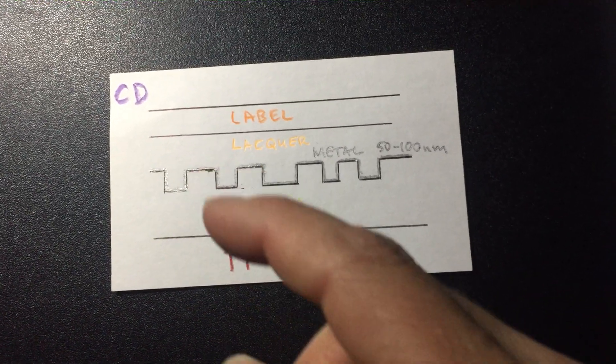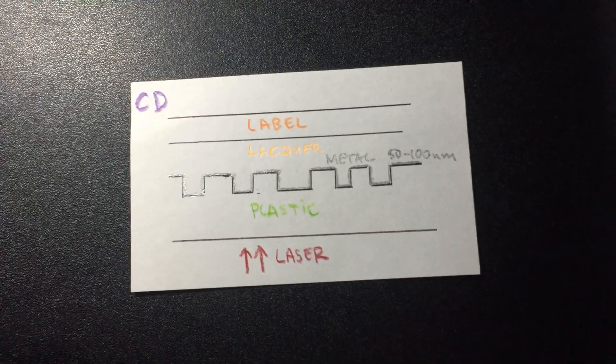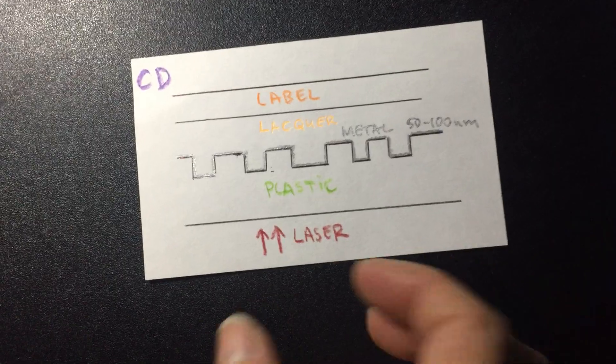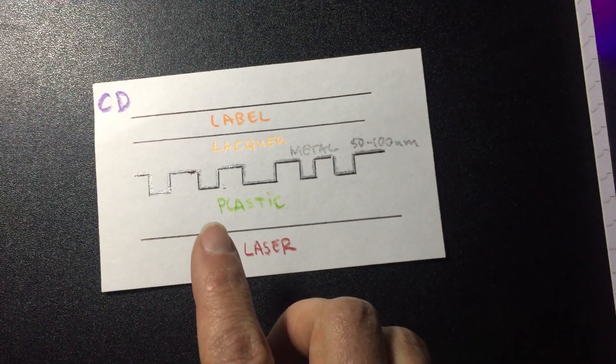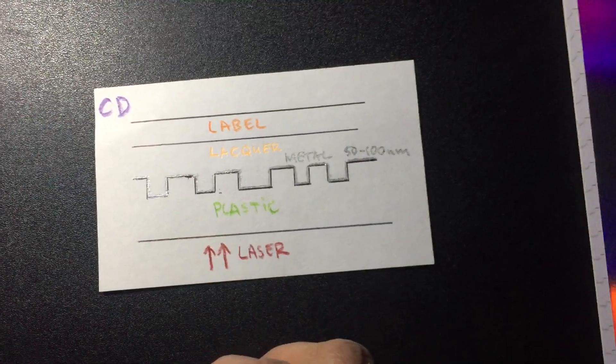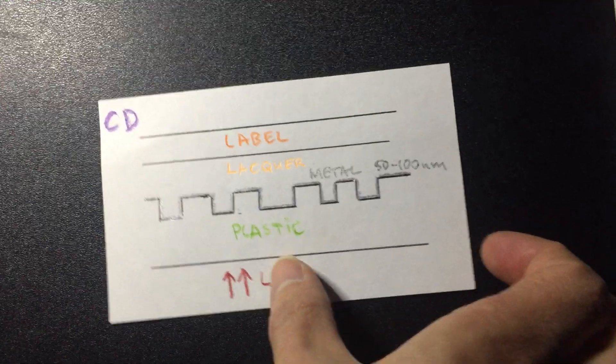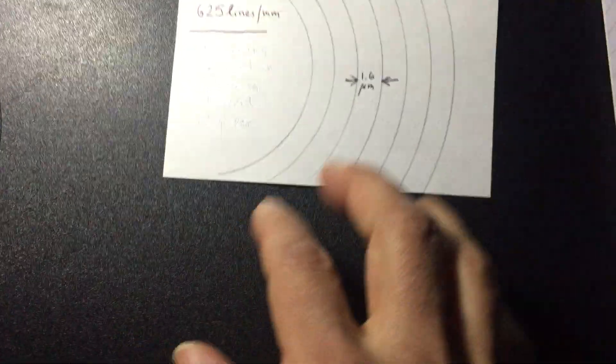You have these ridges, ups and downs, that code for zeros and ones - that's how the information is coded. There are these long lines of about five kilometers of data. When the laser shines from the bottom and reads through the data, it actually sees interference patterns - constructive and destructive interference. It's pretty complicated how the laser detects the data; there are quite a lot of optical elements in there.